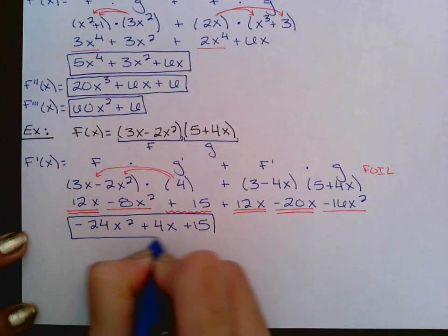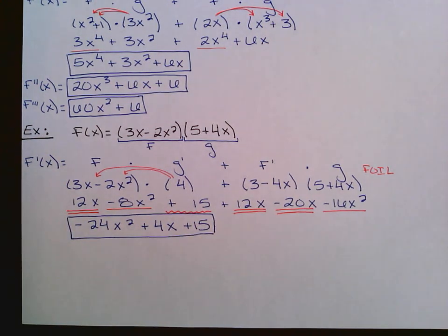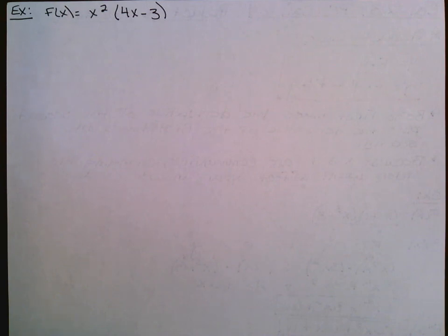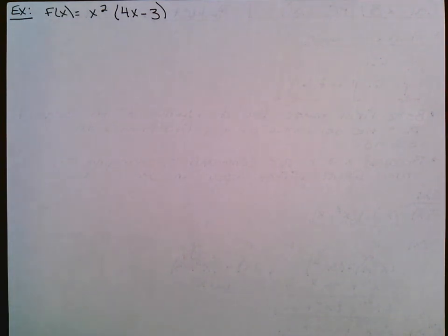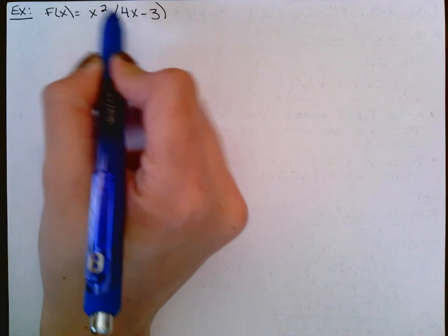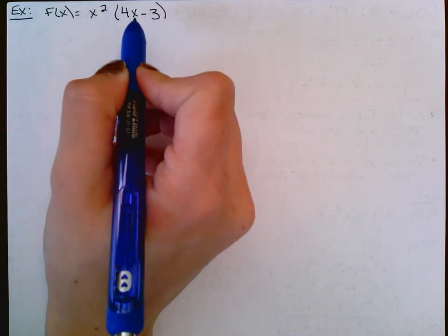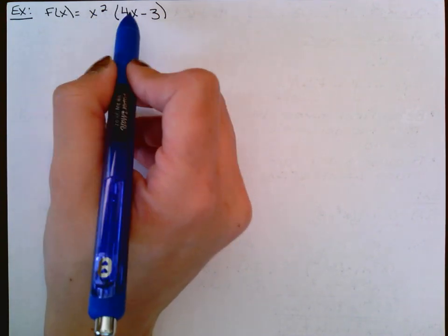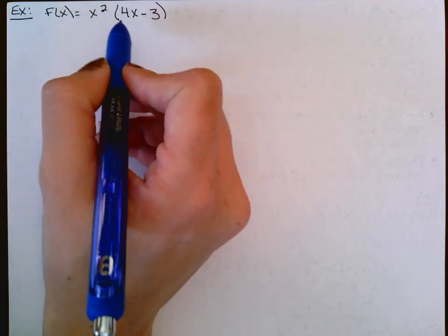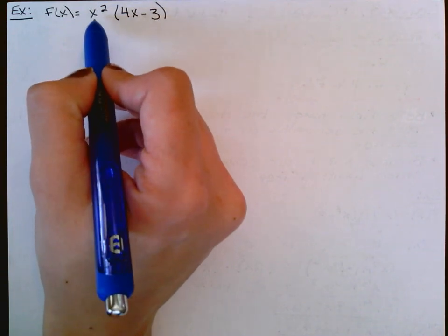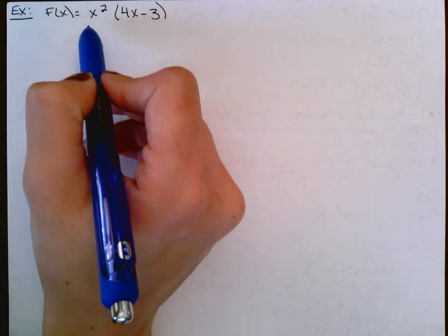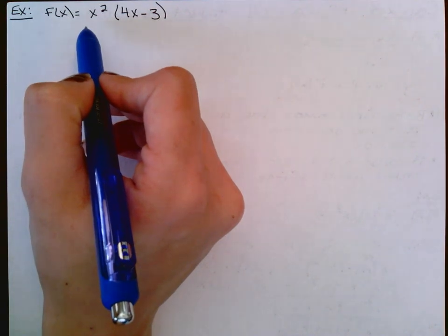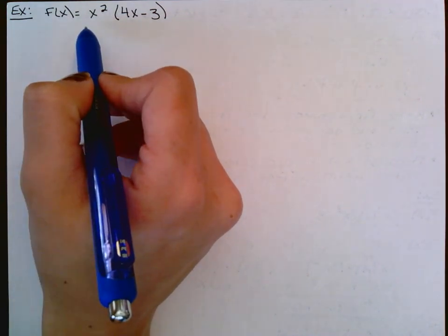Let's take a look at the next example. This is product rule because you have a function times a function — meaning it has a variable. If it were just 3 times (4x − 3), you wouldn't need product rule because 3 isn't a function. You could still use it, but it would be a lengthy process when you could do it much quicker.